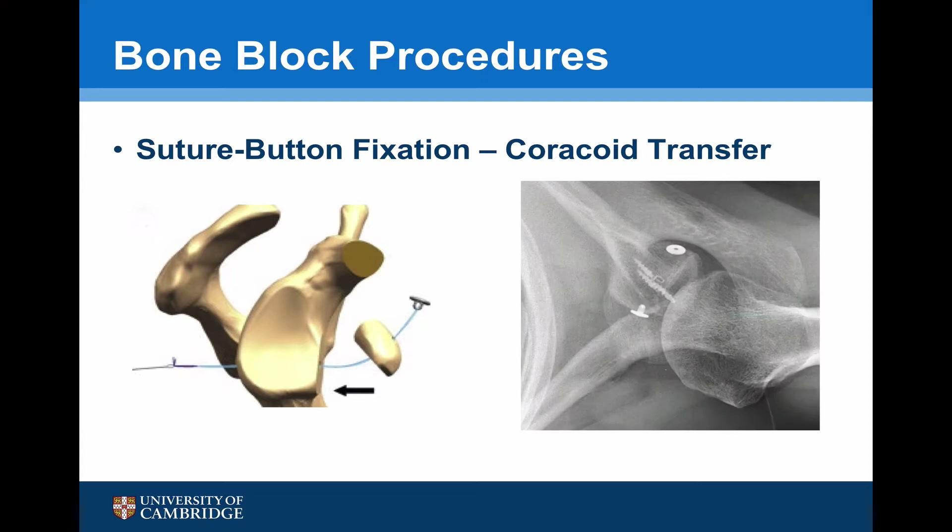In this revision case, you can see that the suture buttons nicely bypass the pre-existing metal anchors, and no further metal work was left within the glenoid.